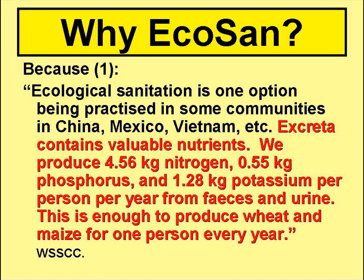So why Ecosan? Firstly, because we each produce around 4.56 kilos of nitrogen, 0.55 kilo of phosphorus and 1.28 kilos of potassium in our excreta every year. And this is more or less what is needed to produce the basic carbohydrate, such as wheat, maize or rice, for one person for one year.